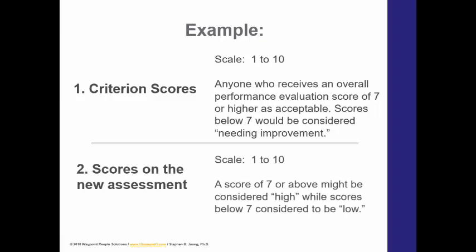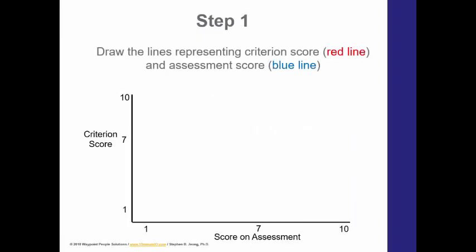Scores on the new assessment also go from 1 to 10. We're going to select a score of 7 or above on the new assessment and consider that high, and anything below that would be considered low. The red line represents the criterion score cutoff at 7 — above which you're considering a high performer, below which a low performer. The blue line represents the score on the new assessment, again using 7 as the cutoff for high versus low scorer.